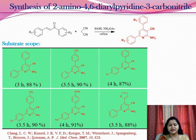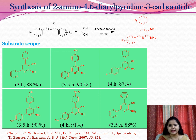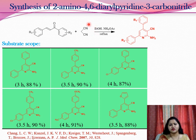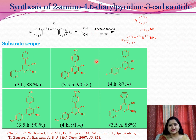For the synthesis of 2-amino-4,6-diaryl-3-nitro carbonitrile, we took chalcone and malononitrile in the presence of ammonium acetate, and we obtained the desired product. These are a few of the cyanaminopyridines synthesized by this method.